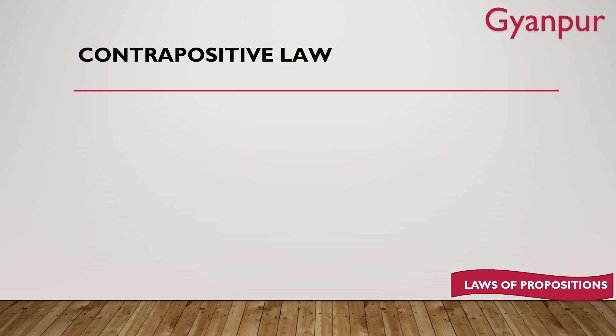Coming to contrapositive law. If you have a statement P → Q, the contrapositive law reverses the variables and applies negation to each individual variable. So P → Q becomes ¬Q → ¬P. The variables are reversed and negation is applied on each — that is contrapositive law.